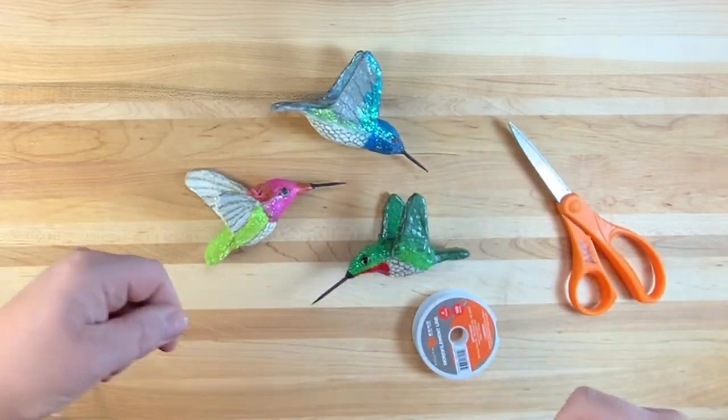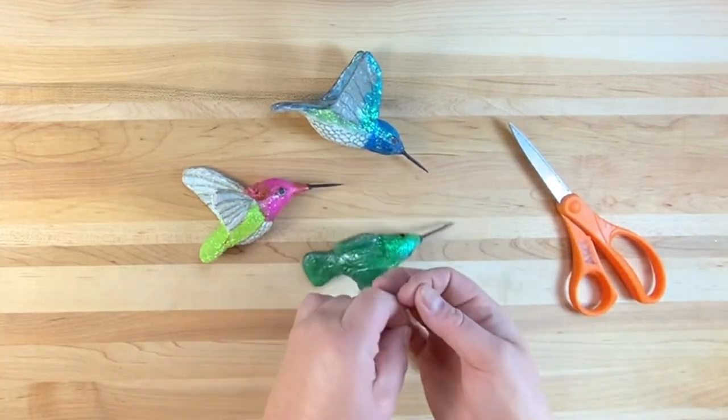Step nine, display. Attach a clear piece of cord to the eye hook and display the bird.